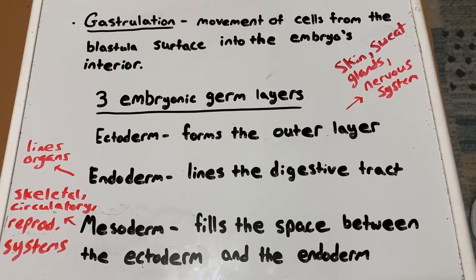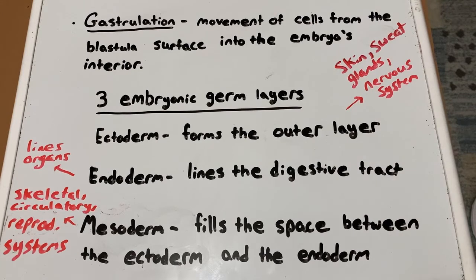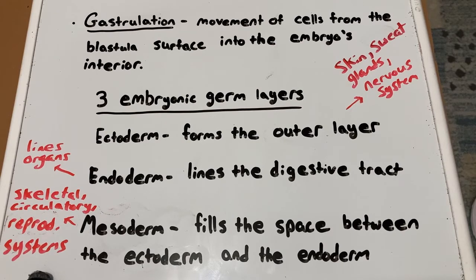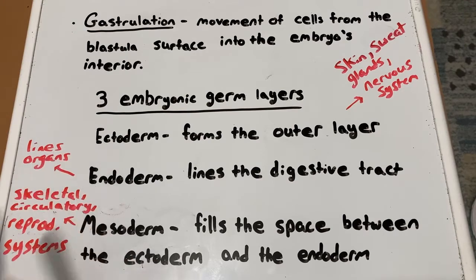The ectoderm eventually turns into the skin, sweat glands, hair follicles, and the nervous system. The mesoderm will eventually turn into the skeletal, circulatory, lymphatic, and reproductive systems. And the endoderm acts as the lining of all the digestive tract and organs.